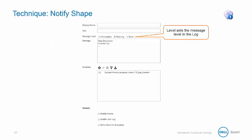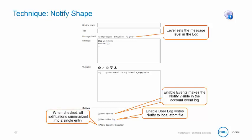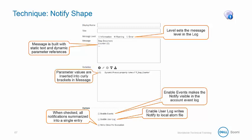The Notify properties that can be set: first, set the message level information. Enable Events makes the Notify visible in the account event log. Enable User Log will write the Notify message to the local atom file. When checked, Write Once Per Execution will batch the Notify messages into one message. The message body can be made of static and dynamic content, and parameters indicated with curly brackets are used to incorporate dynamic data into the message.